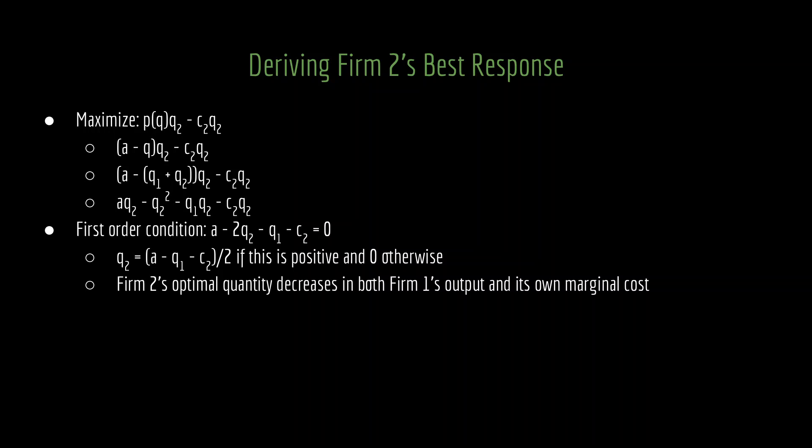We've derived firm one's best response. That was the first step. The second step is solving for firm two's best response. It turns out this is essentially the same problem we were studying beforehand, where now we're flipping every instance of subscript 1 to 2 and every instance of subscript 2 to 1. It's the exact same procedure. Firm two's best response is (a - q1 - c2) divided by 2, with the caveat that it has to be positive, otherwise it would choose zero. Firm two's optimal quantity decreases in both firm one's output and its own marginal cost for the same intuition we were looking at previously.